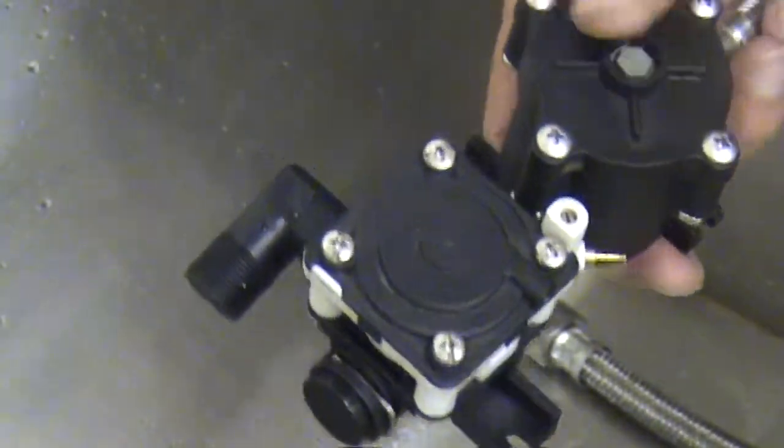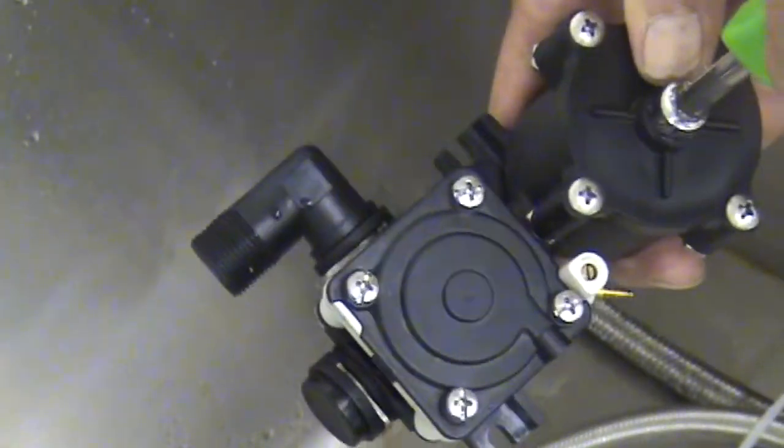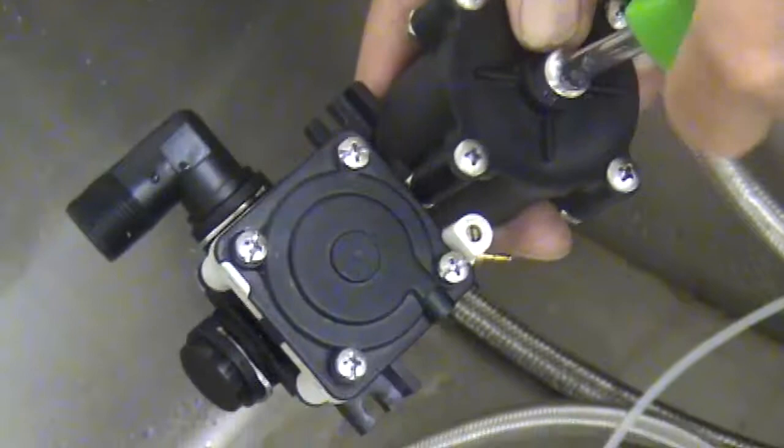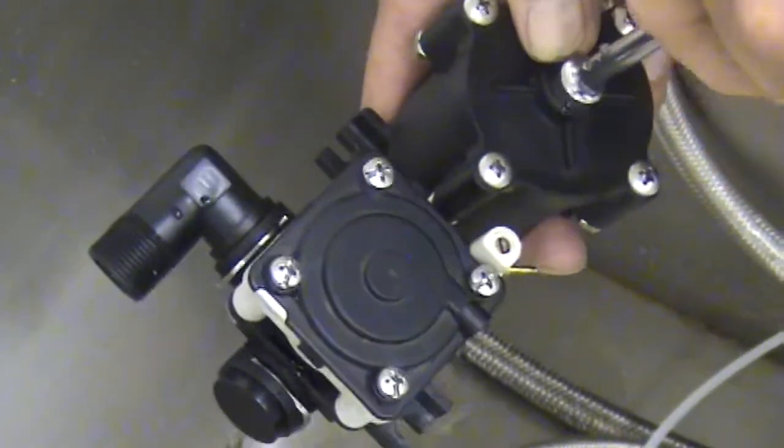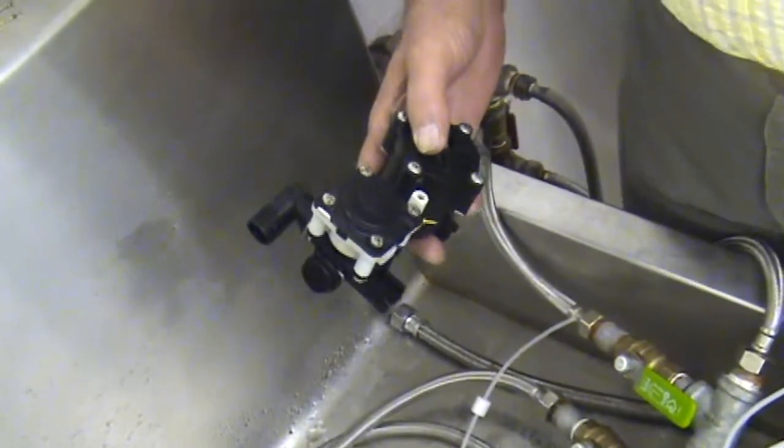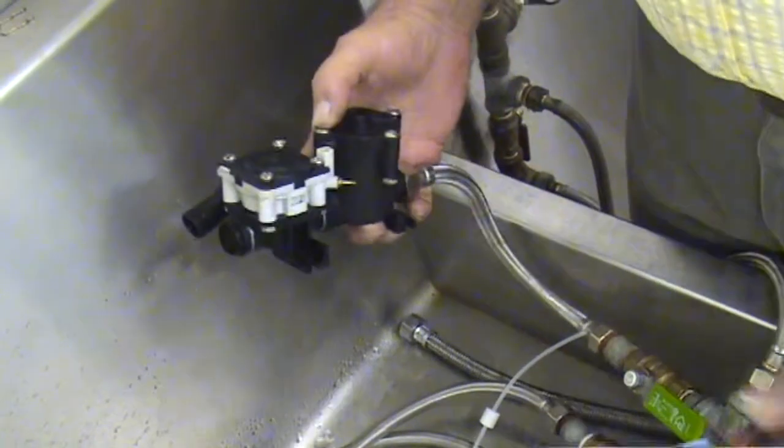However, sometimes that will not resolve your issue and the valve will keep on running, whether the tubing's connected or not. So that tells us that the problem is internal in the water chamber of the valve.